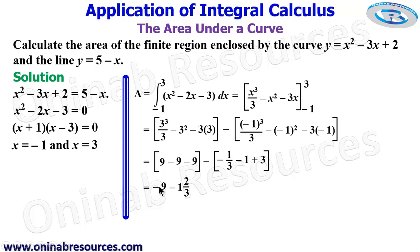So we have it. This is -9 - 1 2/3 will give us -10 2/3. So our area now cannot be negative. So we take the absolute value of this, so that our final value for the area is 10 2/3 square units.